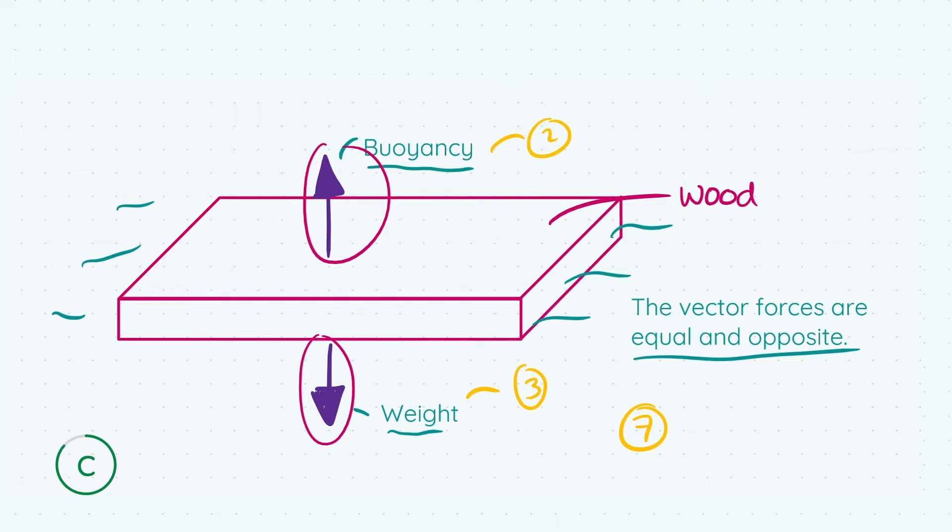Once we remove the earthing implement, all the positive charges that were on the sphere have gone into the ground. All that remains are the negative charges, which were happy to stay on the sphere because they were opposite in charge to the positively charged rod. This results in a negatively charged sphere. The key steps: ground the sphere, bring the charged rod near it, the like charges travel away through the grounding implement, then remove the earthing implement, leaving a charged sphere.